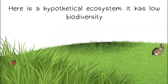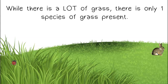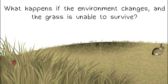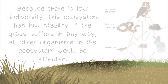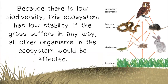Here's a hypothetical ecosystem. It has low biodiversity. While there is a lot of grass, there is only one species of grass present. What happens if the environment changes and the grass is unable to survive? With no other types of plants present, how would the herbivores and the rest of the food chain survive? Because there is low biodiversity, this ecosystem has low stability. If the grass suffers in any way, all other organisms in the ecosystem would be affected.